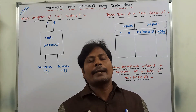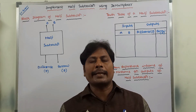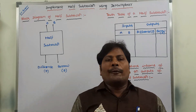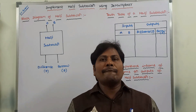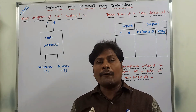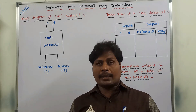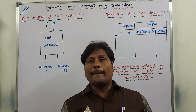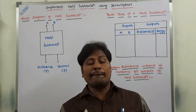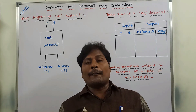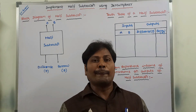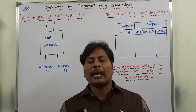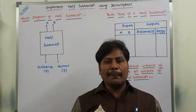Today we have to discuss about implementing half subtractor using demultiplexer in digital electronics, digital logic design, and switching theory and logic design courses. Before going to that, first we need to know what is a half subtractor, what is the truth table of a half subtractor, how to write the boolean expressions for each output in terms of minterms. After that, we can implement the half subtractor using a demultiplexer.